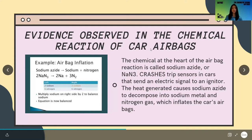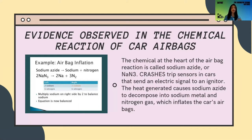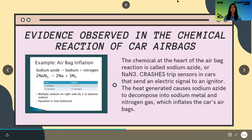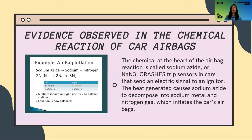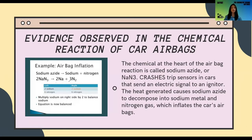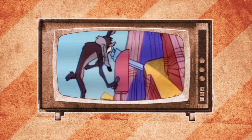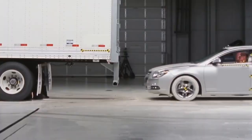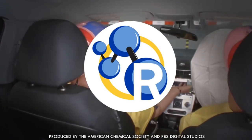Evidence observed in the chemical reaction of airbags: the chemical at the heart of the airbag reaction is called sodium azide (NaN3). Crash trip sensors send an electric signal to an igniter. The heat generated causes sodium azide to decompose. As shown earlier, the type of chemical reaction is decomposition — the product that comes out is sodium metal and nitrogen gas, which inflates the car's airbags. Normally, something blowing up in your face is definitely bad, but this chemical reaction could very well save your life.